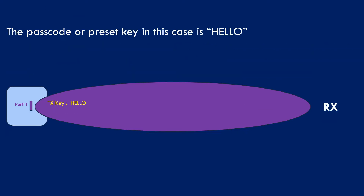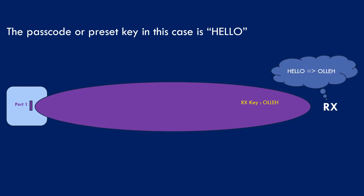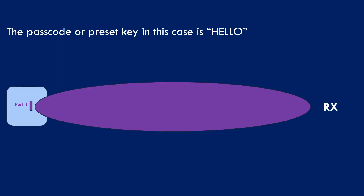Let us take an example where the pre-configured key is the word 'hello'. Before transmitting any data symbols, the network sends 'hello' towards the UE, which is received as inverted at the RX end due to changes made by channel propagation. Now the RX knows how the channel is treating symbols sent over a specific port, and can apply some reverse engineering to decode the actual message transmitted.